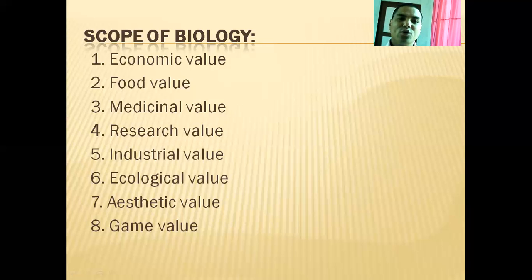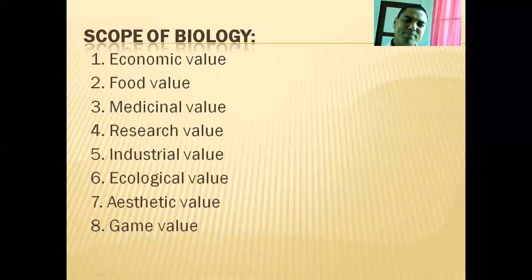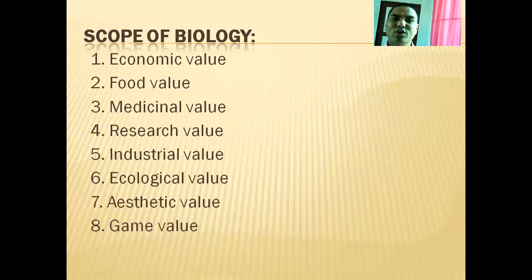We must know about the biology of the cow and buffalo to get milk. We must know about the biology of goats — then only we can get meat. That means food value is one of the scopes of biology.